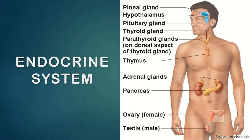As age progresses, the size of the thymus gland starts to decrease. Next come the adrenal glands, seen just above the kidneys. Then comes the pancreas, which has both an endocrine and an exocrine part. Then the gonads — testes in males and ovaries in females. These are the major endocrine glands in our body.